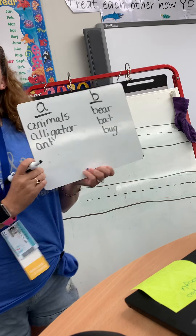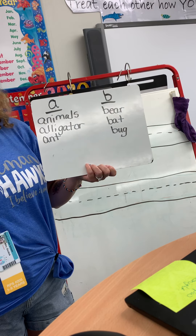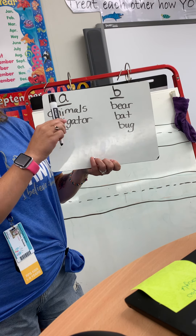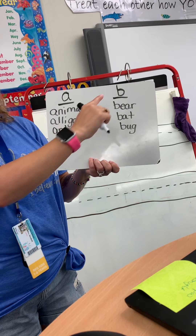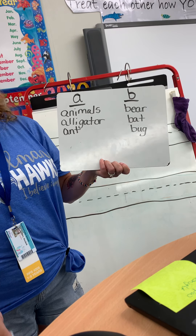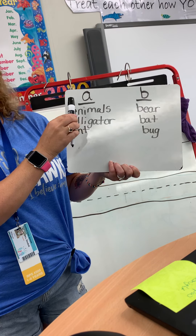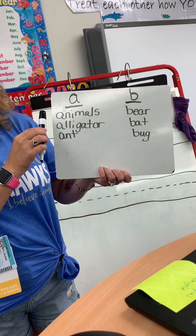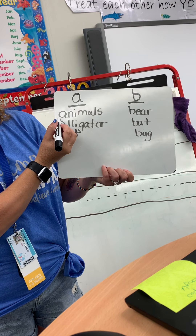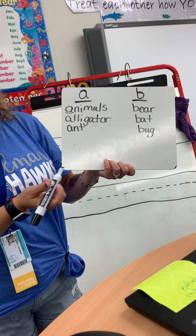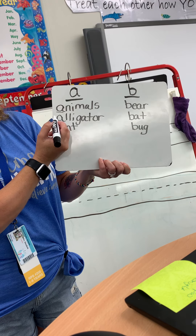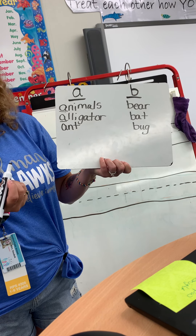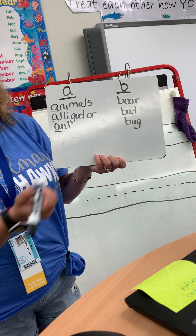Hi, my friends. For Reading Horizons today, we are going to start by making a list of animals that start with A and B. For our animals that start with A, I have the word 'animals' because animals starts with A. I have the word 'alligator' because it starts with an A, and I have the word 'ant' because it starts with an A.